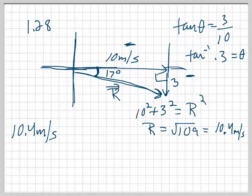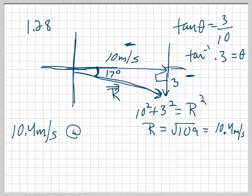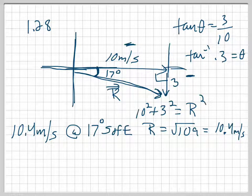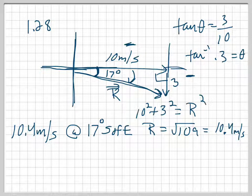There are a couple of ways to express this. You could say 10.4 meters per second at 17 degrees south of east. I could say it's 17 degrees south of east. I hope that makes sense.